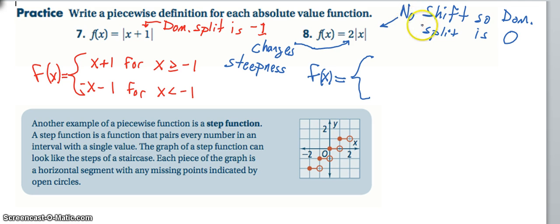So over here on eight, we see that there's no shift. There's no vertical or horizontal shift. The two just changes the steepness. Again, it's like a multiplier magnifier.